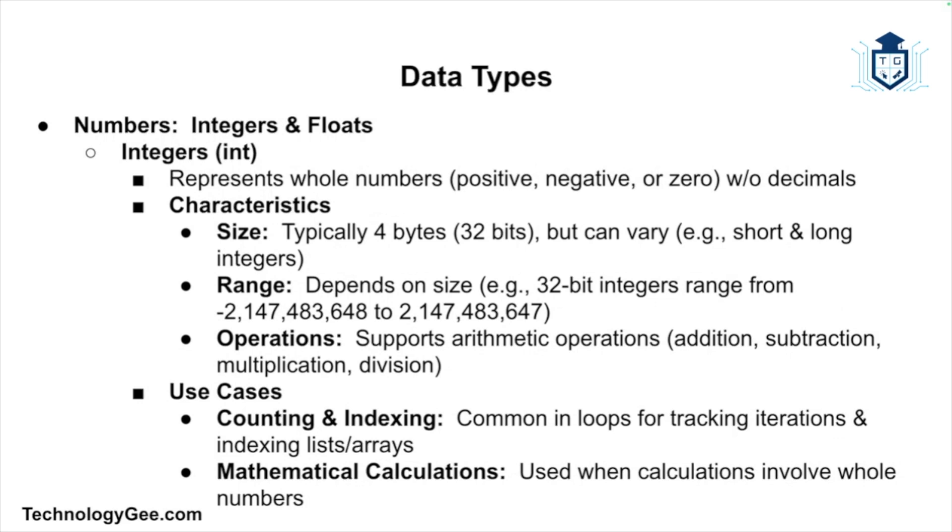Now let's move on to numbers, starting with integers. An integer, often abbreviated as INT, is a data type that represents whole numbers. These numbers can be positive, negative, or zero, but they cannot contain any decimal points. The size of an integer can vary based on the system and programming language. Typically an integer takes up four bytes or 32 bits of memory. However, there are variations like short and long integers. In a 32-bit system, an integer can range from negative 2.1 billion up to 2.1 billion.